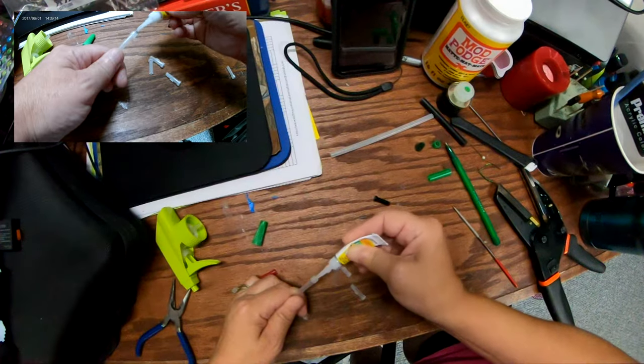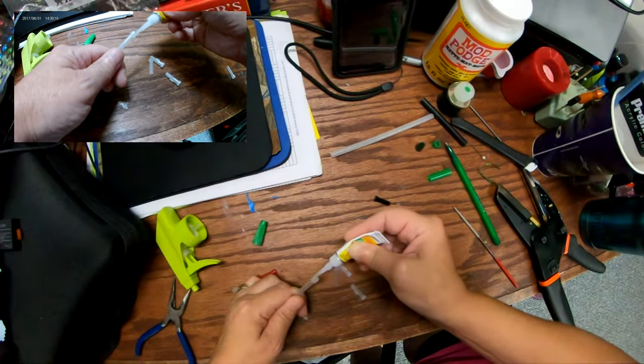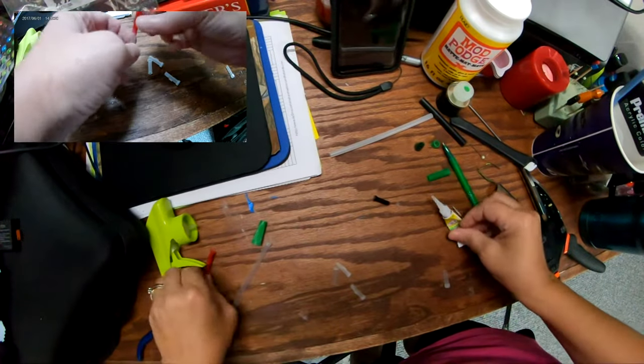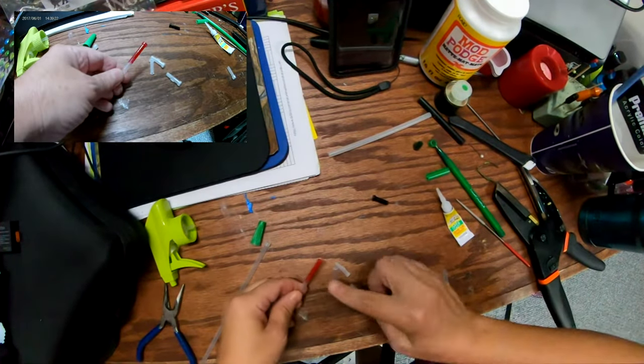Then you want to go ahead and put some super glue around here to kind of hold it in place. Let that dry. When that is dry, then you want to go ahead and paint it.